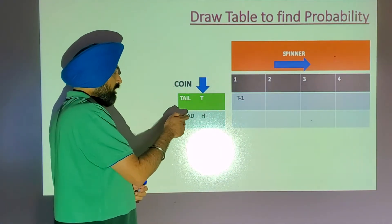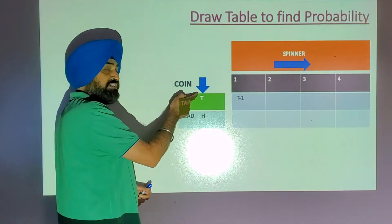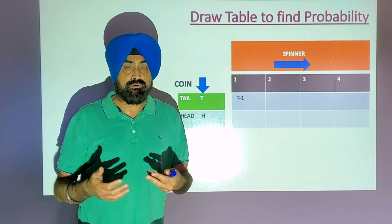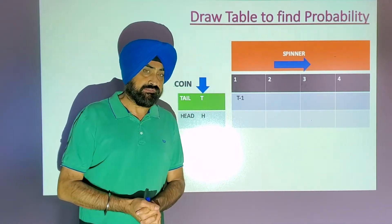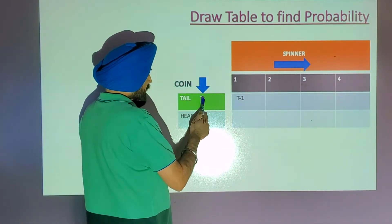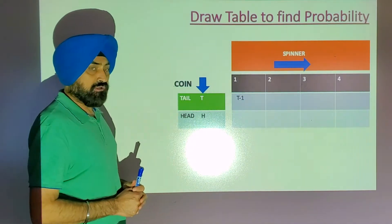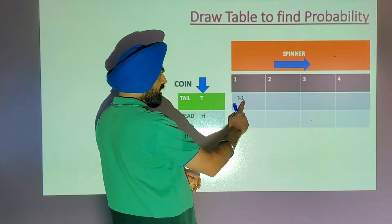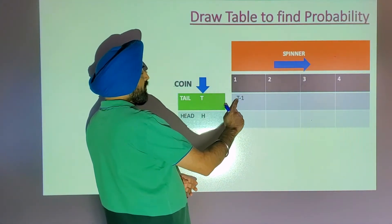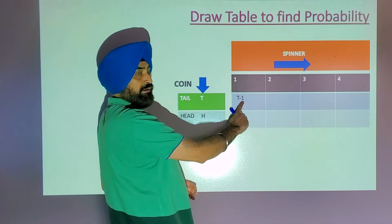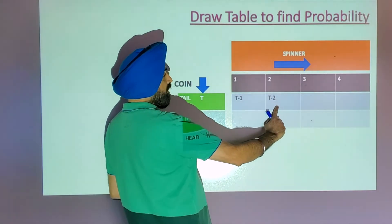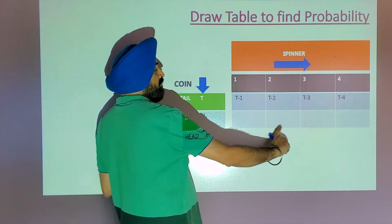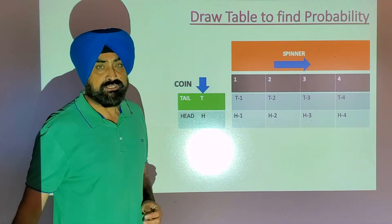I am taking the coin on the vertical side and the spinner on the horizontal side. When you toss a coin, possibly tail can come or head can come — both have equal chances. For example, after tossing the coin you spin the spinner. If tail comes, one can come on the spinner, two can come, three can come, four can come. Similarly, if head comes, these are all possible chances.